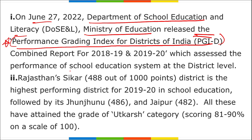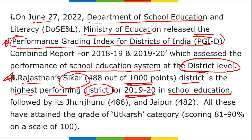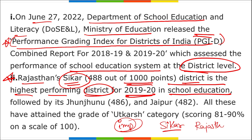In the Performance Grading Index for Districts of India, Rajasthan's Sikar district is the highest-performing district for 2019–2020 in school education. This index is based on the performance of the school education system at the district level. Sikar district of Rajasthan has secured the top position as one of the best-performing districts for school education.